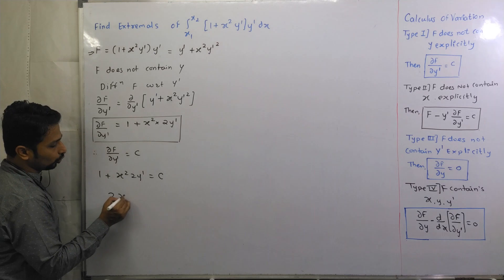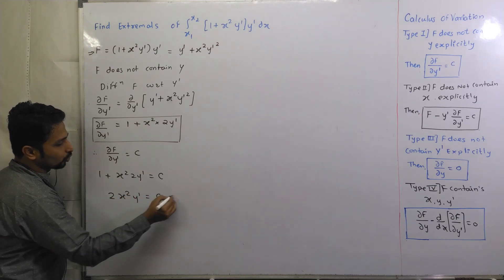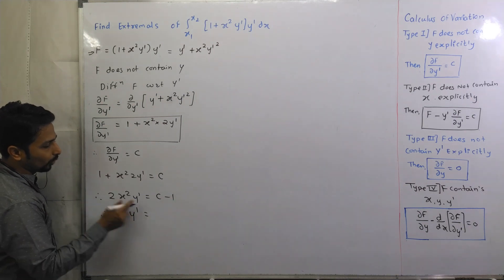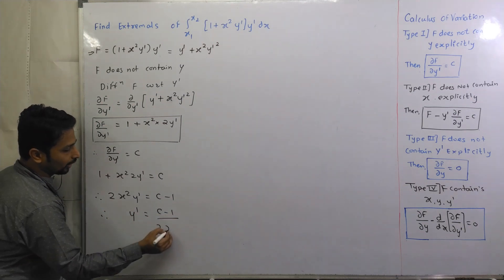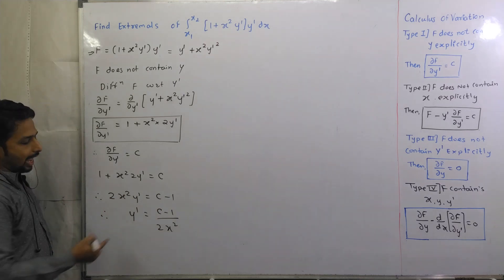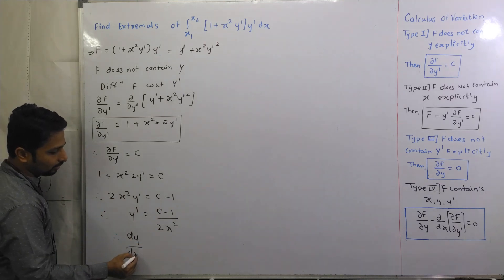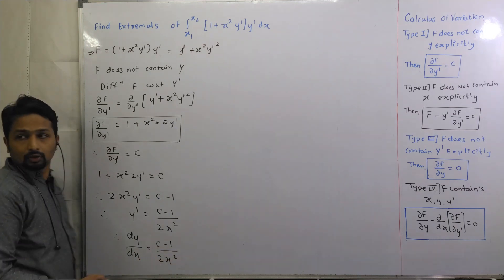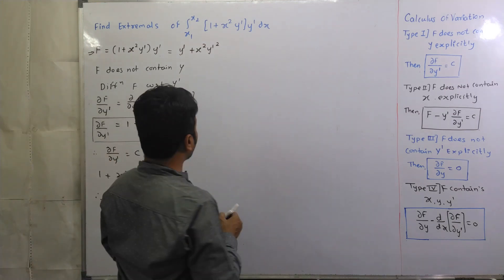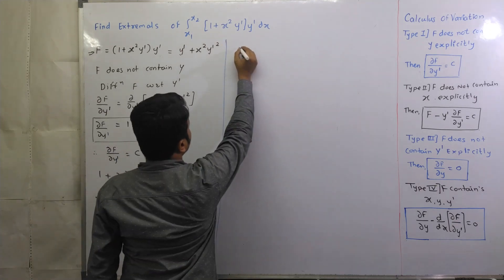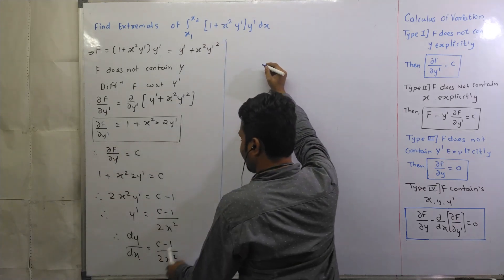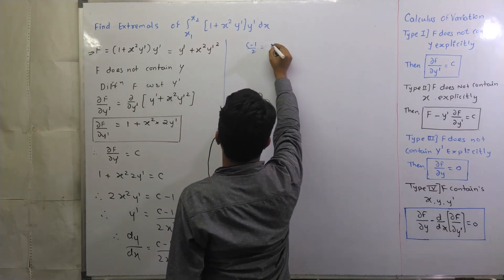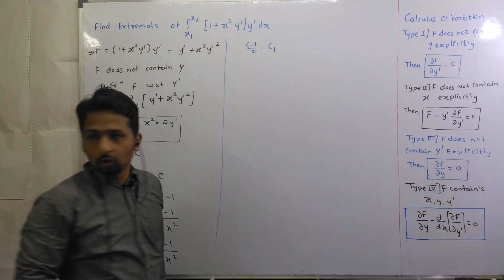And if you have got 2 x square y dash is equal to c minus 1, then you have got 2 x square and y dash is actually dy by dx. So c minus 1 upon 2 x square. Then consider c minus 1 upon 2 as a new c1.